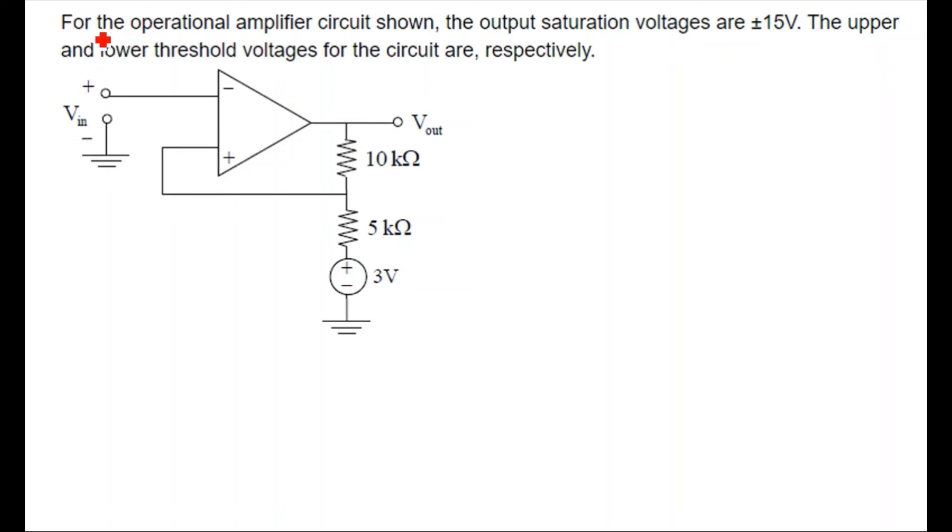Hello guys, today's question is for the operational amplifier circuit shown. The output saturation voltage is plus minus 15 volts. The upper and lower threshold voltages for the circuit are respectively what we need to calculate.